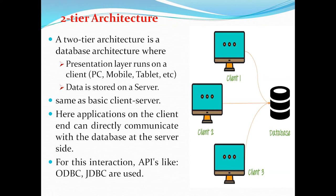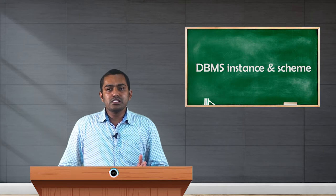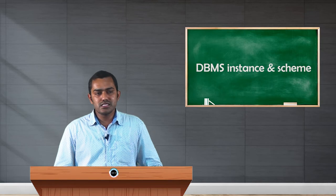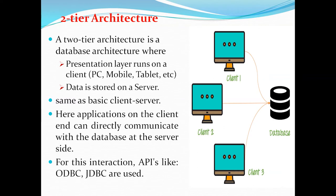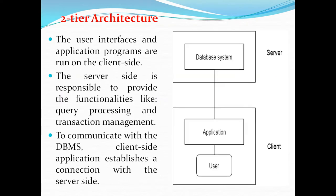In Tier 1 architecture, client-side request processing and data storage are all in a single system. But in Tier 2 architecture, request processing is performed in one system and the database is kept in another system. To access the database from the application side, we use APIs — specifically ODBC and JDBC APIs. In this diagram we can clearly see the user sends a request, it is processed on the client-side system, and only the database resides on a separate server. This is the client-server concept implemented in two-tier architecture.